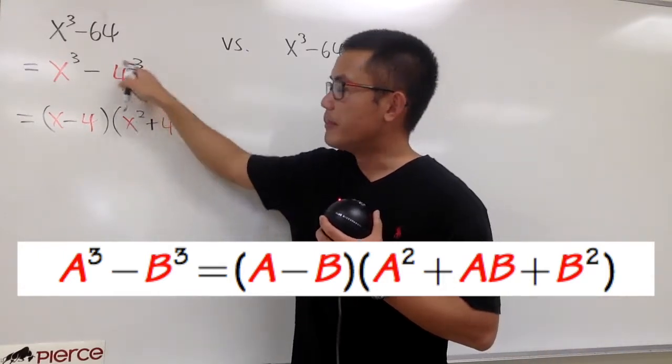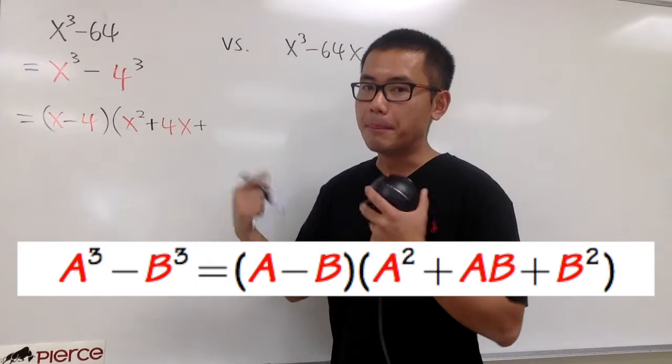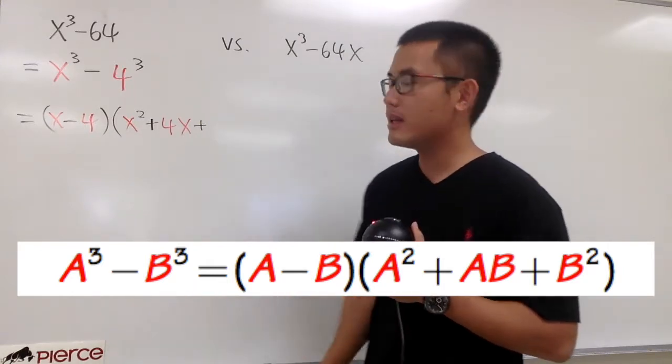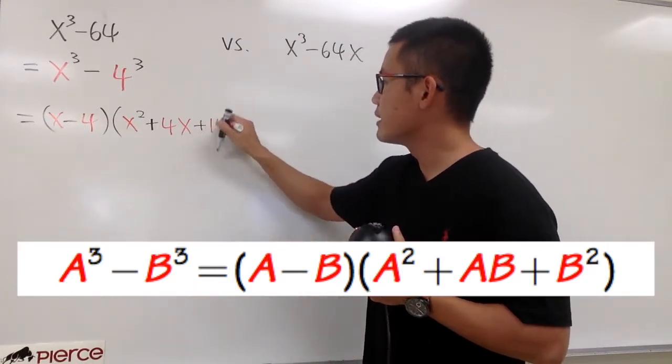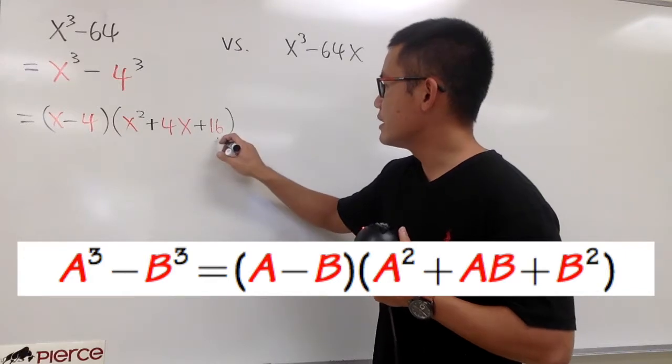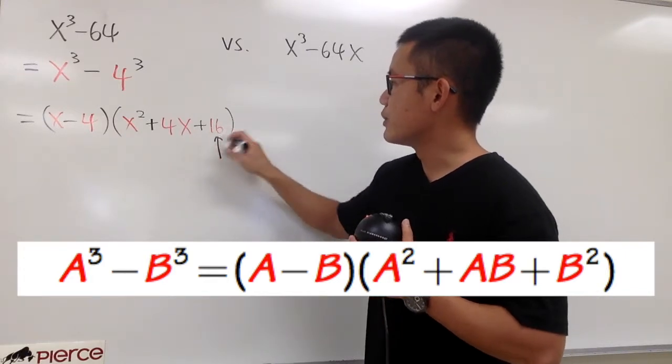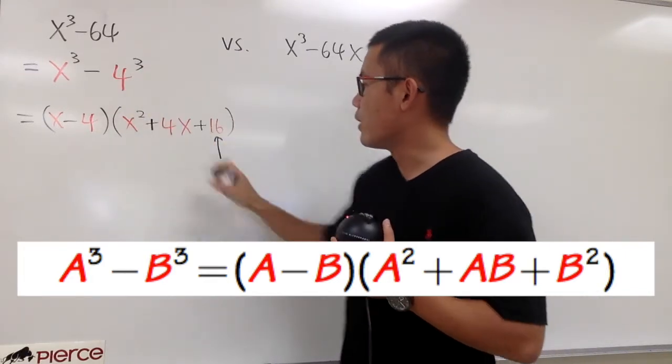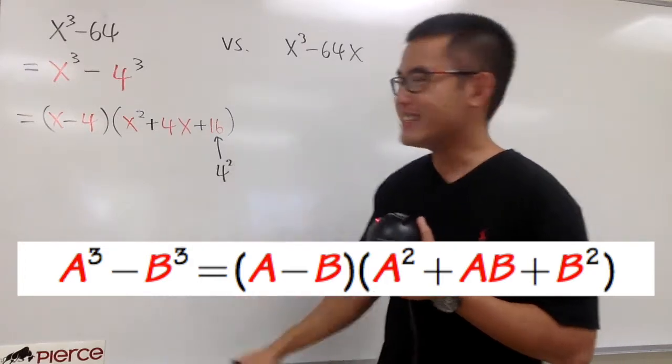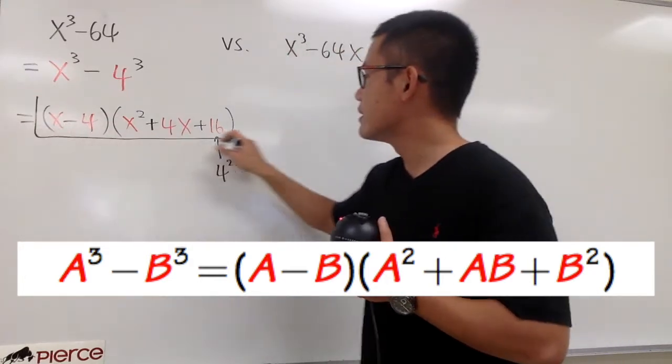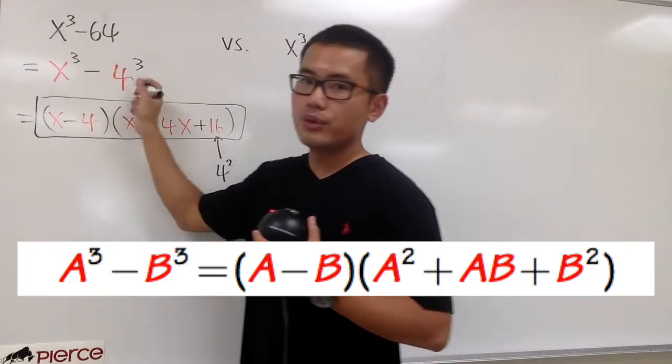And then the last term is going to be plus, you have to look at the number in red, which is the 4. And square that, that's the b squared part of the formula. 4 squared is 16. And this is it. And once again, let me indicate this for you guys. To get the 16, we look at the 4 and square that. So this is it. This is how we factor out the difference of two cubes.